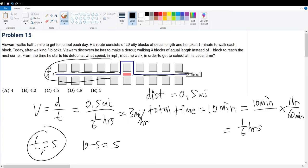Velocity is distance divided by time. What is the new distance that he must travel? Every block is the same length, and if he travels 0.5 miles across 10 blocks, then 0.5 miles divided by 10 gives us the number of miles per block, which is equal to 0.05 miles per block.